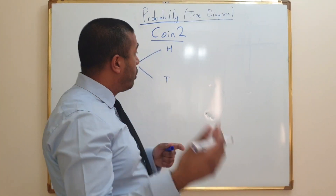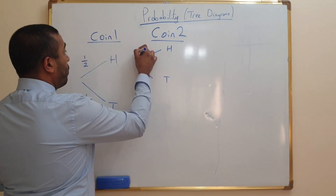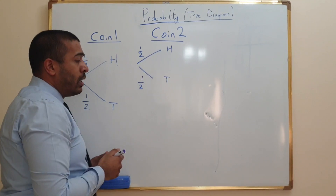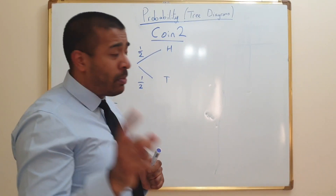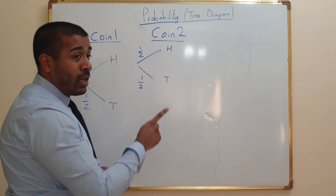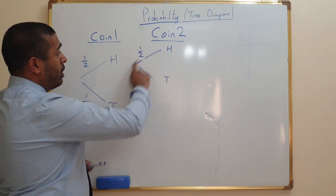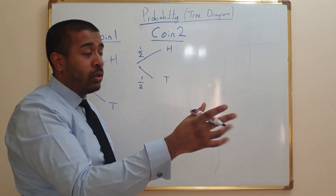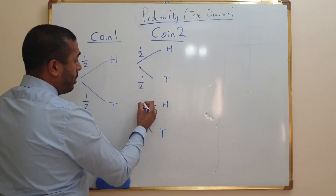For coin number two, the outcomes are exactly the same — heads and tails. The probability of getting heads is one half, and the probability of tails is also one half. If I go heads the first time, I could get heads or tails the second time. If I got tails the first time, I need a separate branch — I can't go back up and join the other one. So we repeat the same thing: heads with probability one half, tails with probability one half.